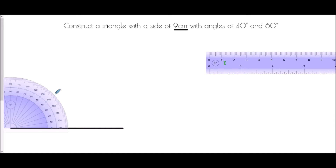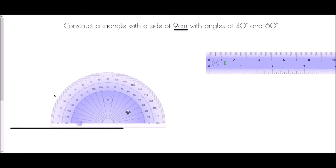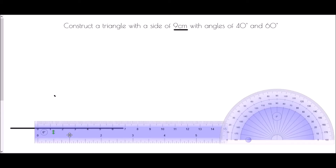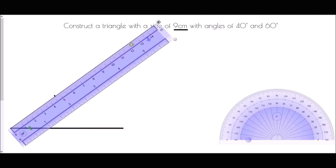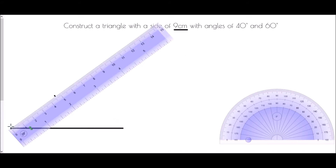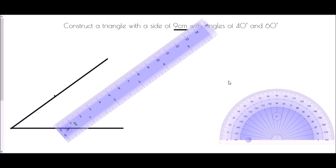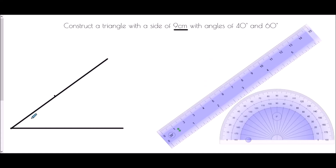Again I'm using the inside numbers, so here is my 40 degrees. Now the problem is I don't know how long this line is meant to be, so all I'm going to do is with my ruler draw a line through that point as far as I possibly can — just a long line all the way along the edge of my ruler. At least I now know that I've definitely got a 40 degree angle and a base side of 9 centimeters.